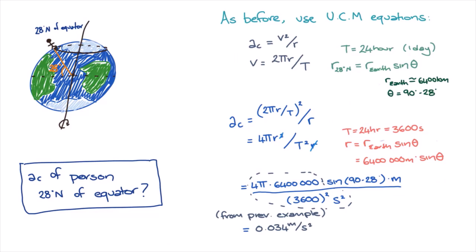So we can then see that the centripetal acceleration in this example is 0.034 meters per second squared times sine of 90 minus 28 degrees. Calculating, we find that this comes to 0.030 meters per second squared.